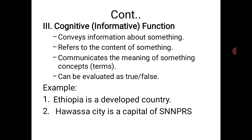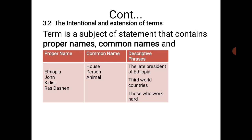The cognitive or informative function of language is used to give complex information about something. Informative sentences are declarative sentences — they can be valid or invalid, true or false. For example, 'This is the best developed country,' or 'This is the capital of a nation' — these are informative statements that can be evaluated as true or false.